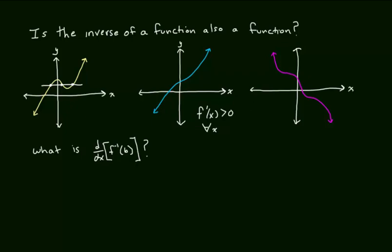Now let's look at the pink graph. In this case, the function is always decreasing, and since it's always decreasing, it too will pass the horizontal line test. I would like to point out that f prime of x, in this case, is always less than or equal to zero. There appears to be perhaps a horizontal tangent here and a horizontal tangent here. The good news is it doesn't go from a horizontal tangent and then change its increasing or decreasing behavior — the derivative temporarily equals zero, but then it continues to decrease. And since this is true for all values of x, we would say that the inverse of the pink function is also a function.